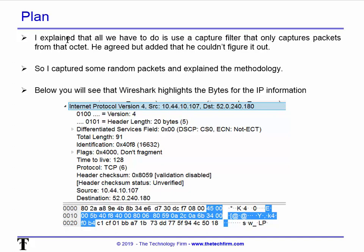The plan: I explained that all we have to do is issue a capture filter that only captures packets from that octet. You'll see an example here — dot 180. He agreed, yeah it sounds simple but he couldn't figure it out. So we captured some random packets and then I explained the methodology. Whenever you need to figure out a filter, just capture some packets and then work backwards from there. You can also look up RFCs or scour the internet, but if you've got the methodology down pat, getting a packet and working backwards is the best approach.